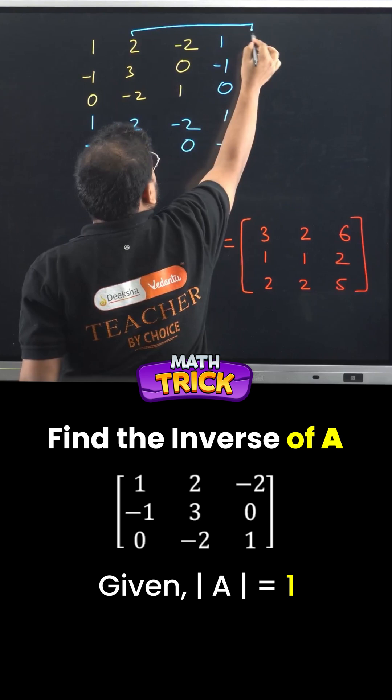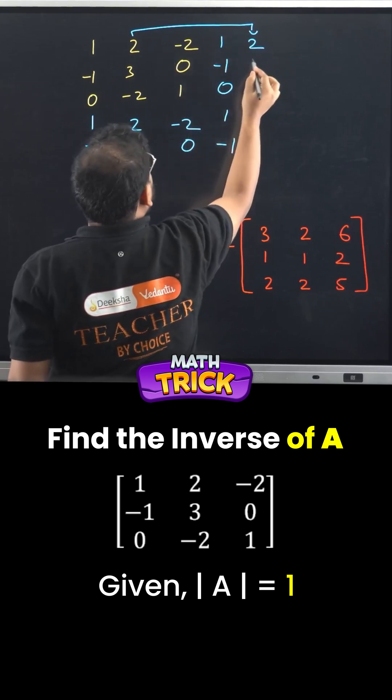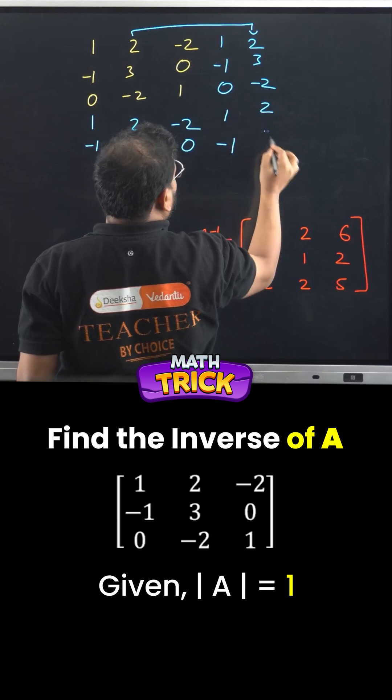Second column from here will give me, what is it, 2, 3, minus 2, 2, and 3.